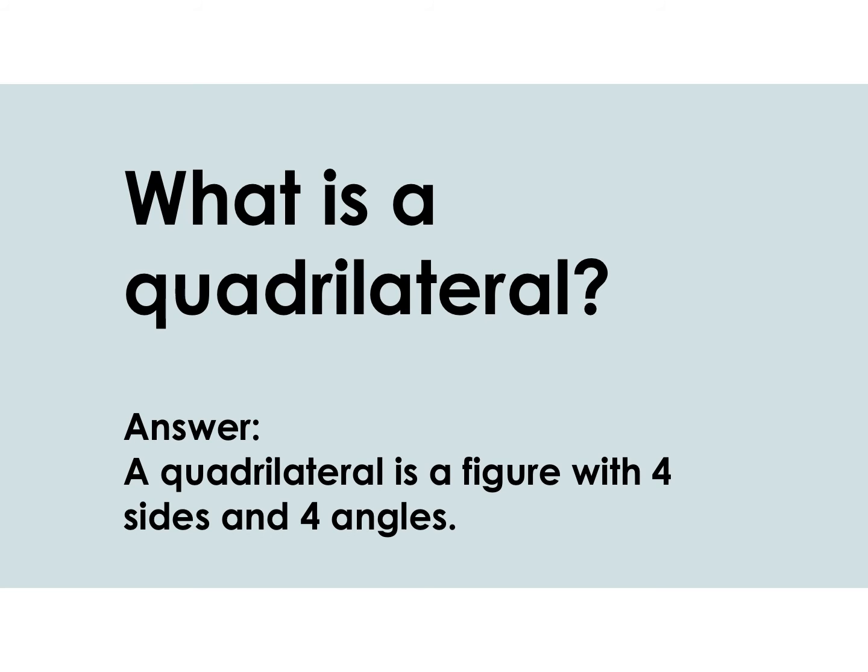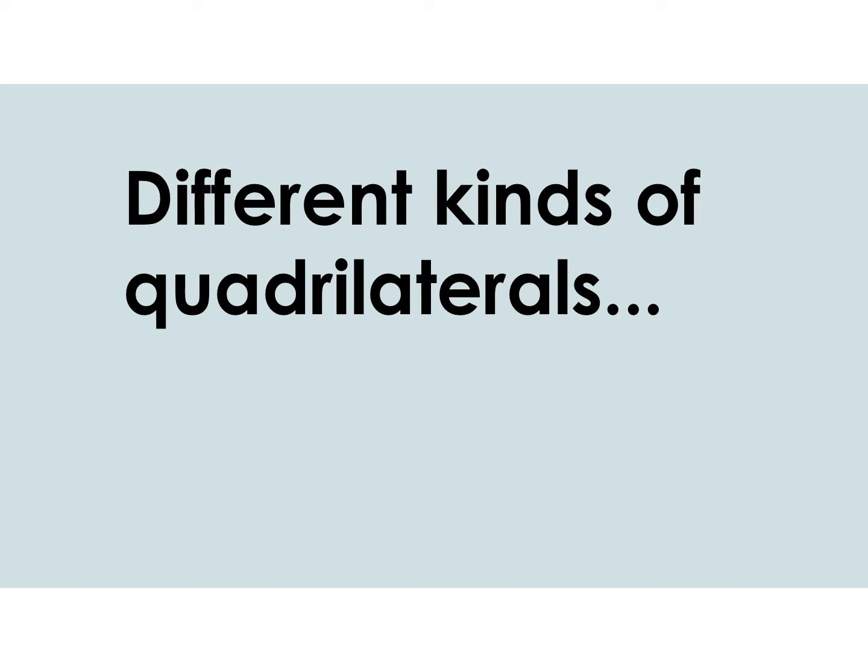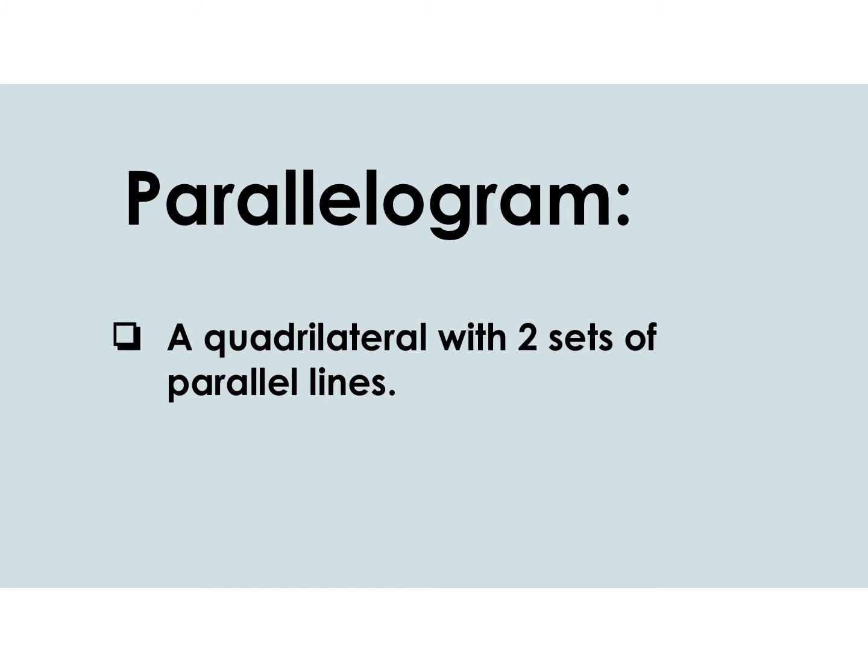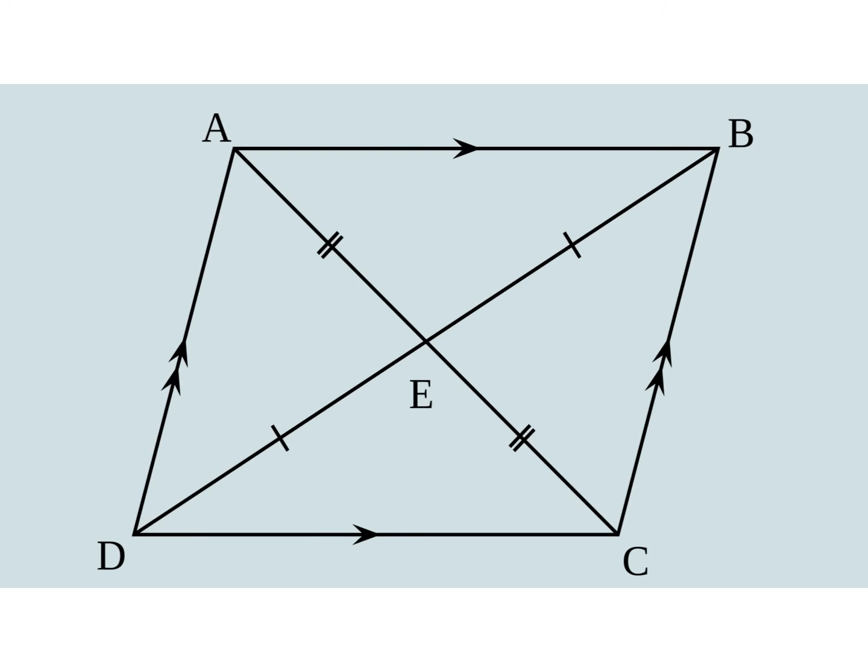Okay, let's review quadrilaterals — that's what you had for homework online yesterday. A quadrilateral is a figure with four sides and four angles. Remember we're still talking about two-dimensional shapes. Here we're going to be discussing the different kinds or types of quadrilaterals. First we have a parallelogram — a parallelogram is a quadrilateral with two sets of parallel lines.